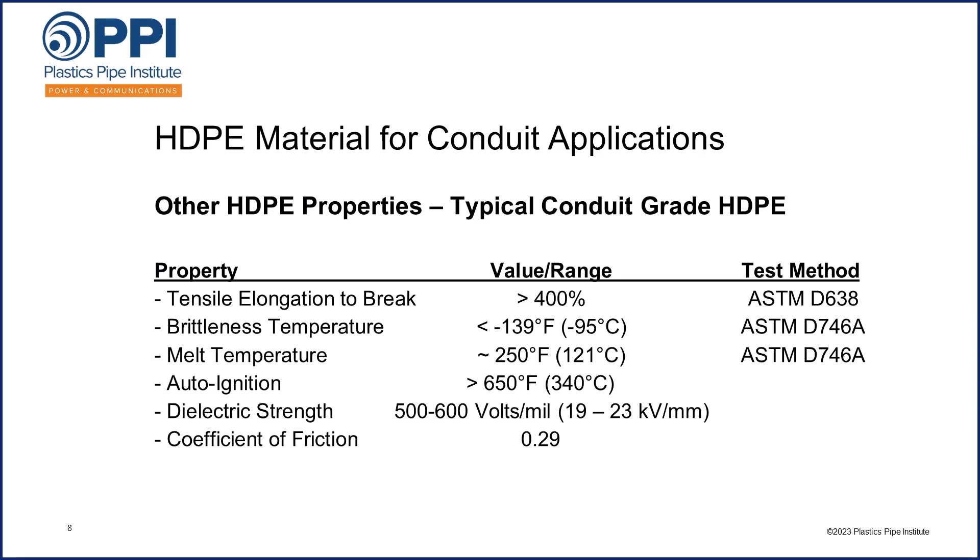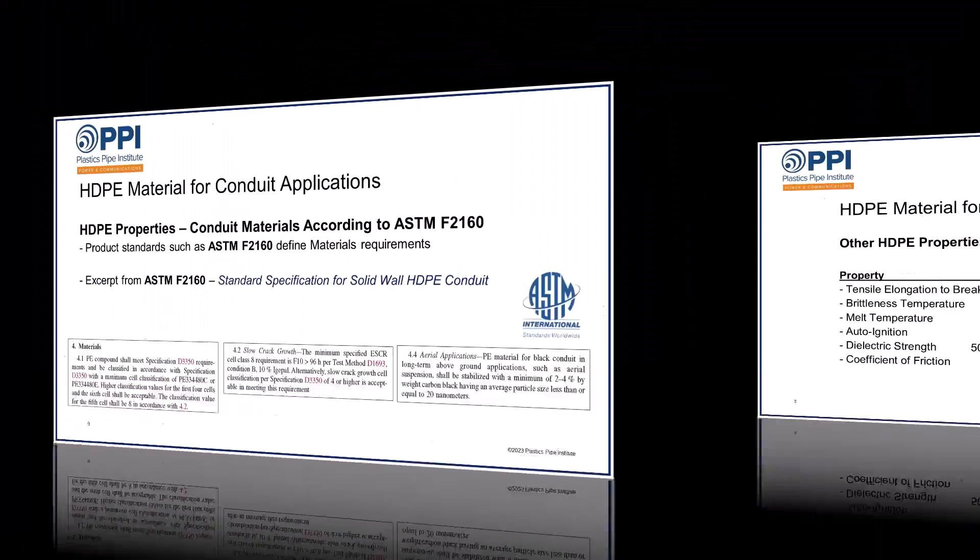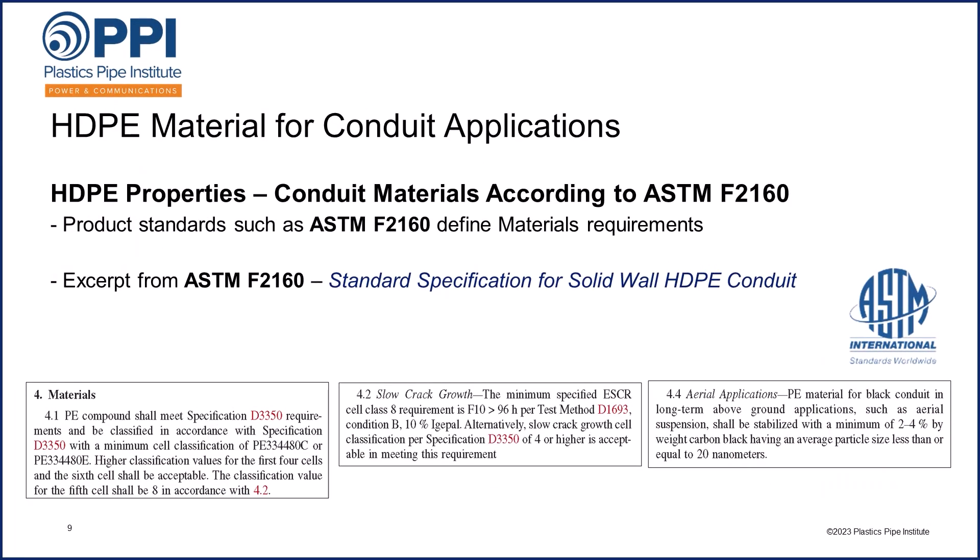Now a lot of these properties are specified in product standards. The primary product standard for HDPE conduit materials is ASTM F2160, the standard specification for solid wall HDPE conduit. Below are a few screenshots from ASTM F2160, the material section which defines exactly where those cell classification values are published and applied. In section 4.1, it is defined exactly what the minimum cell class shall be. The slow crack growth resistance is also defined in section 4.2. And for aerial applications of conduit, in section 4.4, it's defined how those products are UV stabilized against sun damage using carbon black, as those would be non-buried but exposed outdoor applications on poles.